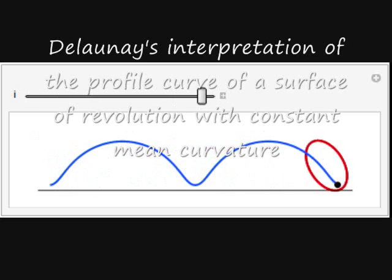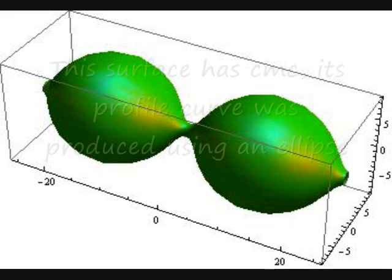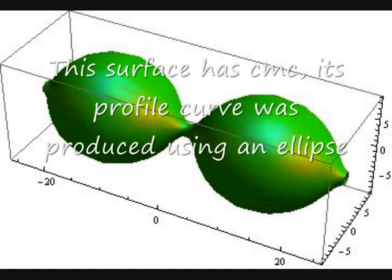170 years ago, Delaunay showed that if we roll an ellipse on a line, its focus will trace the profile curve of a surface of revolution with constant mean curvature.